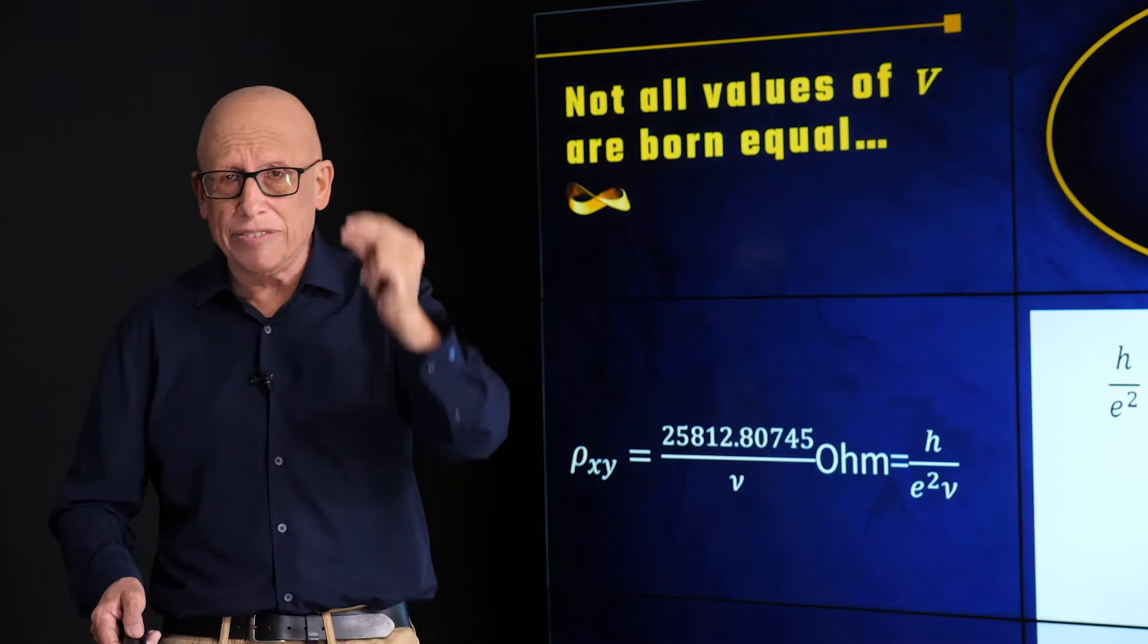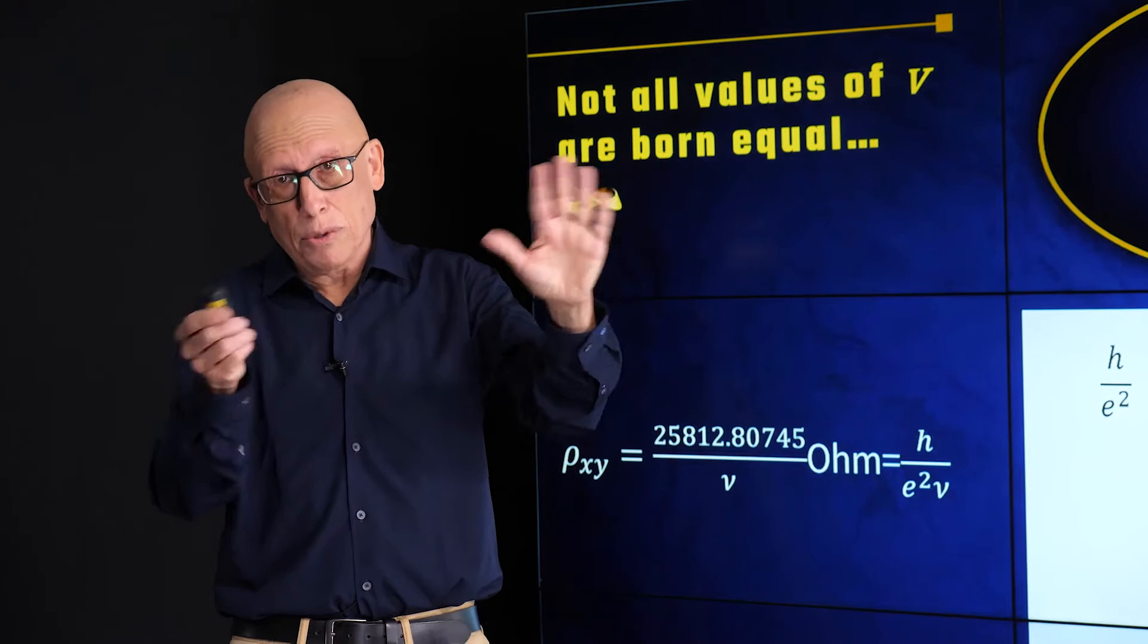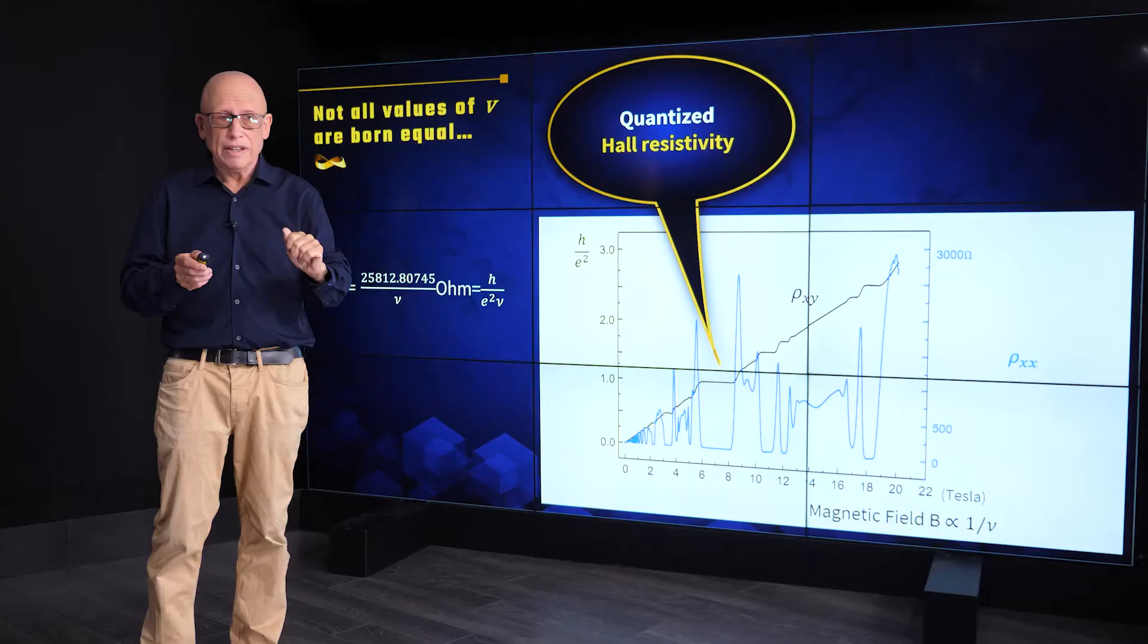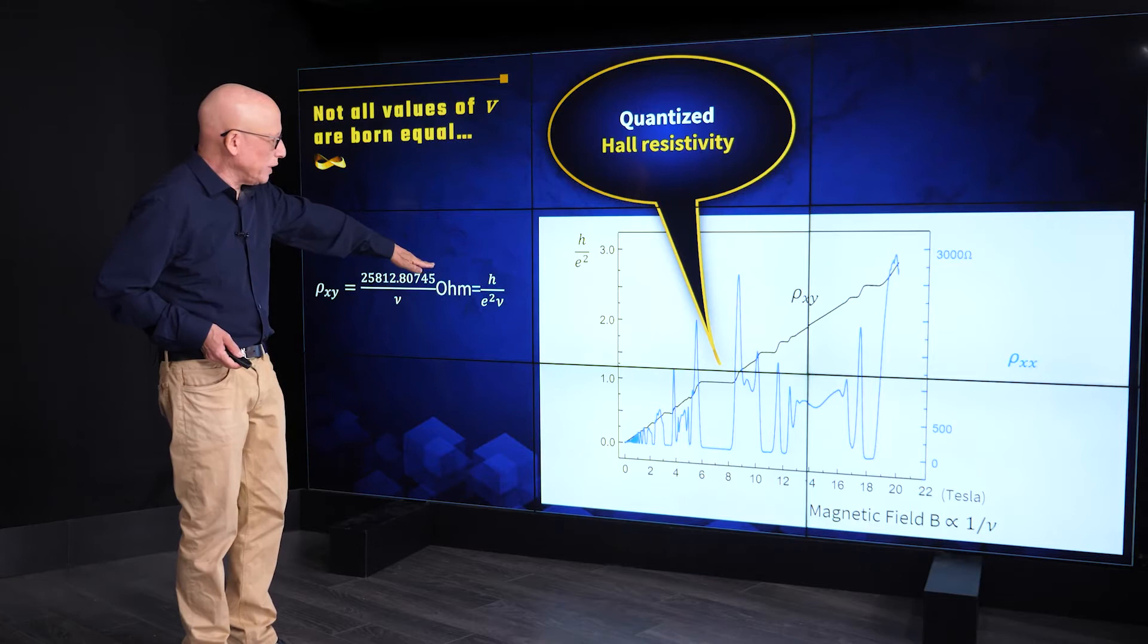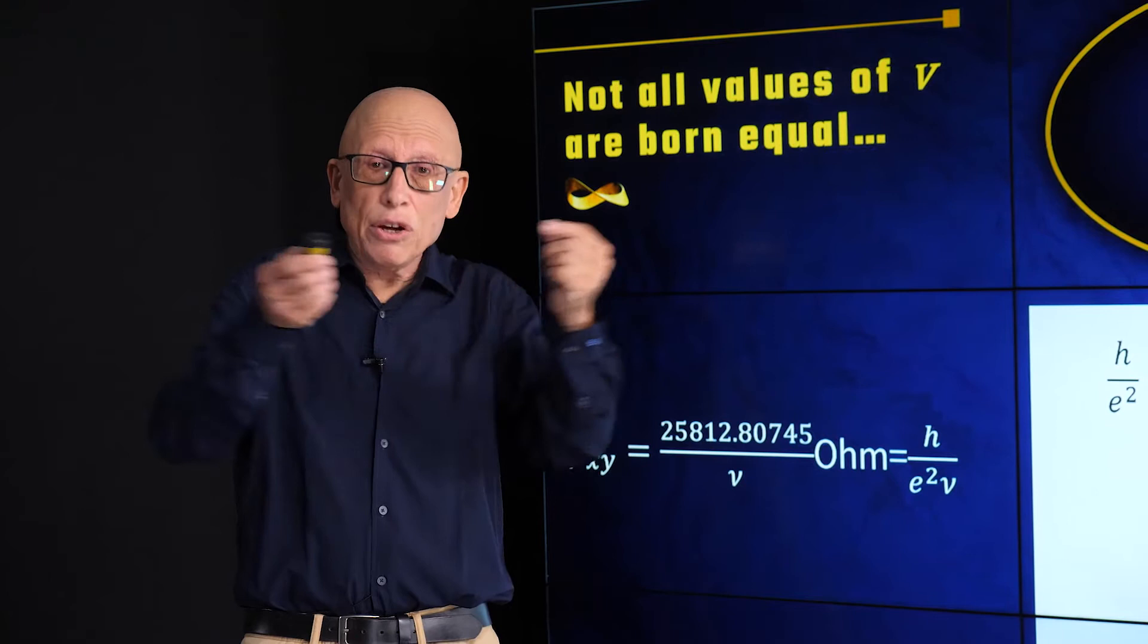Usually, resistivity is something that depends on material. Here, we have a resistivity that is determined by the ratio of two of the four fundamental constants of the universe: Planck's constant, quantum Hall effect, right? Planck's constant over the electric charge squared. And you see, it gets stuck on nu equals 1.